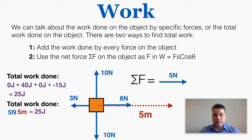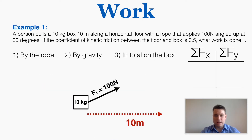Here's an example: a person pulls a 10 kilogram box 10 meters along a horizontal floor with a rope that applies 100 Newtons angled up at 30 degrees. The coefficient of kinetic friction between the floor and box is 0.5. What work is done by the rope, by gravity, and in total on the box? It's always helpful to start by drawing a free body diagram, showing the 100 Newton force going up and to the right at 30 degrees, broken into its x and y components.